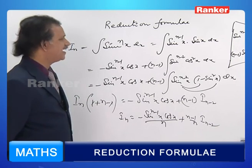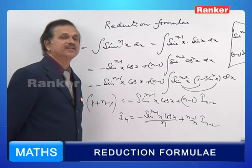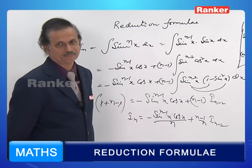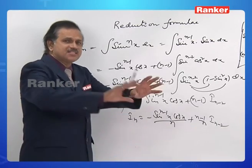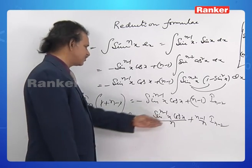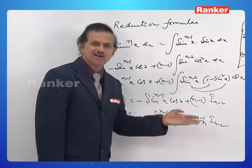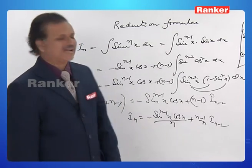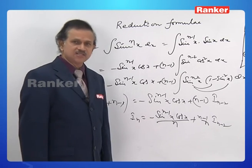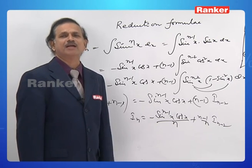For integral cosⁿx, we split as cos^(n-1)x·cos x. Whereas for tan^n x, we split as tan^(n-2)x·tan²x — there has been a change in the procedure. As a teacher I suggest you remember this, but as a friend, I would say it is not impossible to rederive these two or three steps. At this moment, let us calculate the reduction formula for integral tanⁿx.